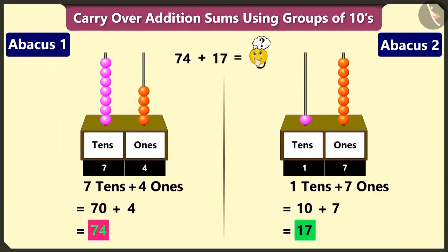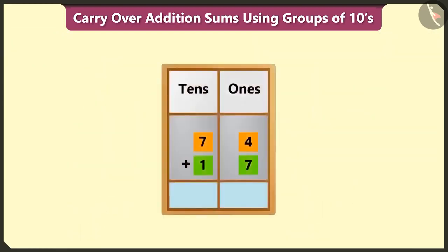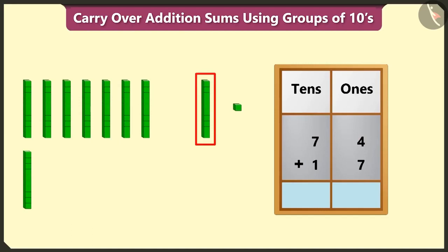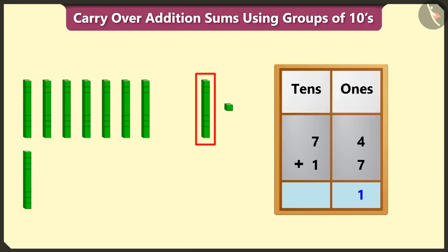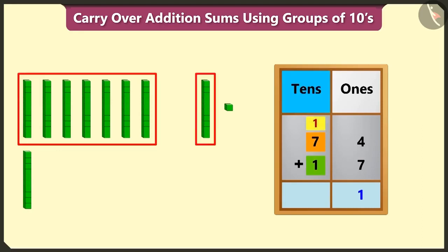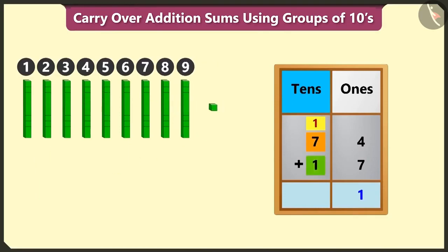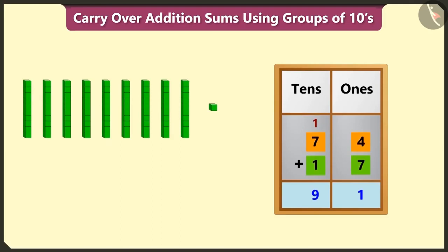Now, we have to add 74 and 17. But before that, we have to write both the numbers in the ones and tens boxes. After writing both numbers, adding 4 and 7 in the ones box makes 11. 11 means 1 ten and 1 one. We write 1 in the ones box and carry over 1 ten. Adding 7 to the carry-over 1 equals 8, and adding 1 to 8 equals 9. So we write 9 in the tens box. 74 added to 17 gives a total of 91.